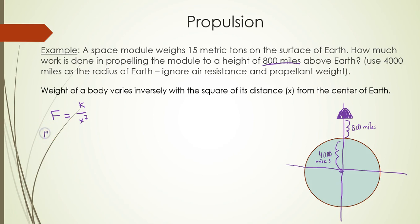K is the constant, or the relationship constant, so we need to actually find k as it does exist in this situation. We know that f equals 15, and x equals 4,000. So the force is 15 because it's 15 metric tons for the space module, and then initially you are 4,000 miles from the center of the Earth before you begin propelling upward.